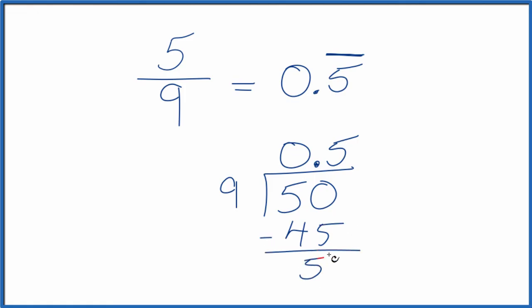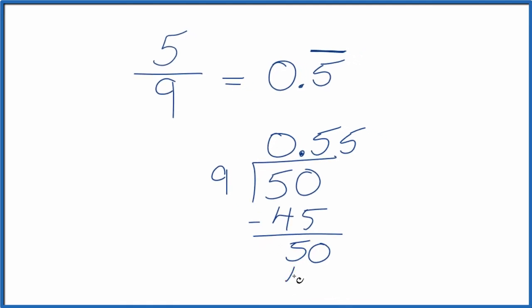We could subtract, we get 5. Call it 50, we move over one decimal place. 5 times 9, that's 45.